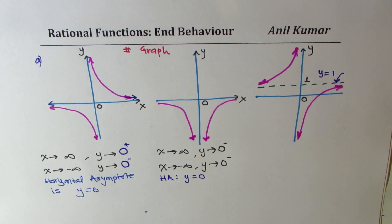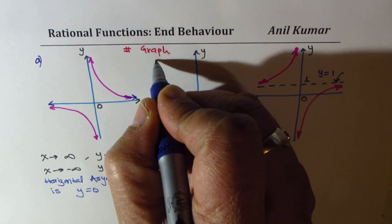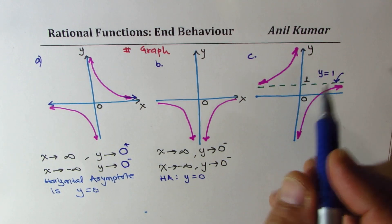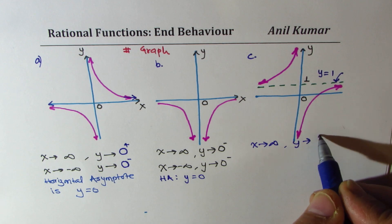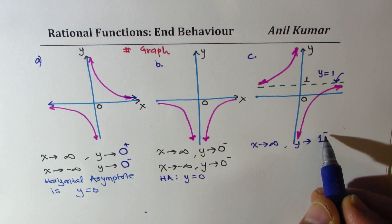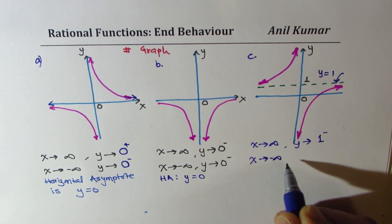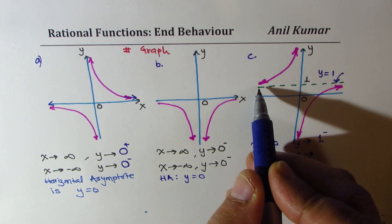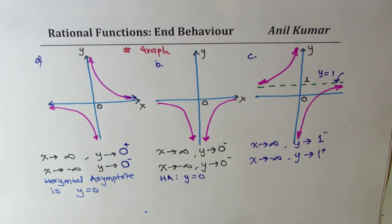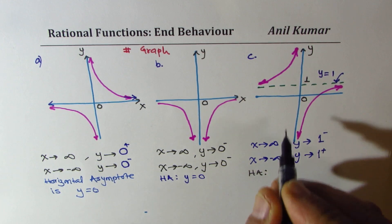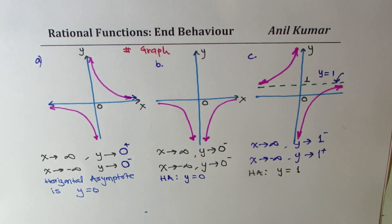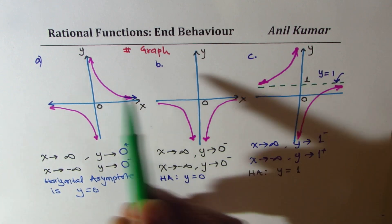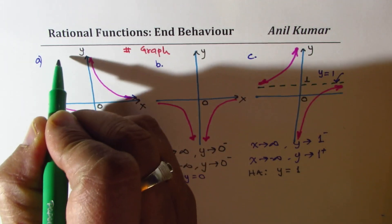Graph B also has a horizontal asymptote of y = 0. Now in Graph C, when X approaches positive infinity the Y value approaches 1 from below, so we write 1−. When X approaches negative infinity, Y approaches 1 from above, so we write 1+. The horizontal asymptote here is y = 1, since the function approaches 1 as X approaches positive or negative infinity.